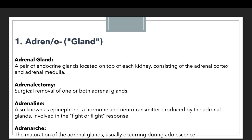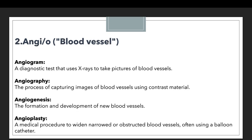For the next prefix, we have angi or angio. The prefix angio is mainly used to denote blood vessel — whenever you want to denote something related to a blood vessel, we use the prefix angi or angio. The first example is angiogram.